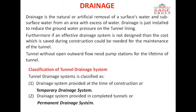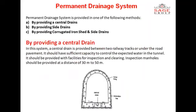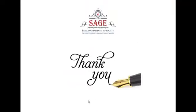To recap today's session: we covered the drainage systems of tunnels, including the temporary drainage system required during construction — comprising the open ditch drainage system and the pumping system — and the permanent drainage system required after construction, which includes three types: central drains, side drains, and corrugated iron sheds with side drains. This was all for today's session, and we will be discussing more in the coming videos. Thank you.